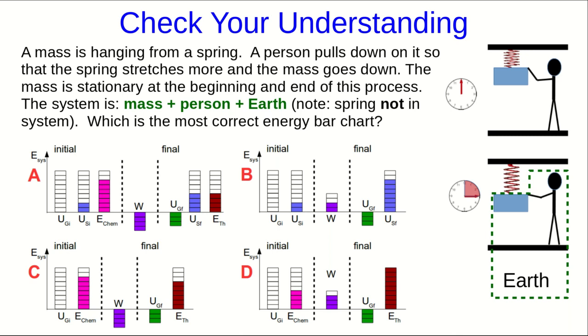Here is the question that I asked at the end of the previous part of this lecture. The main issue here is noting that the spring is not in the system, and so all of the bar charts A and B, which include a spring potential energy, are incorrect because the spring potential energy is part of the environment's energy.